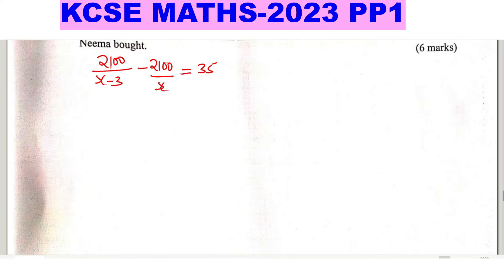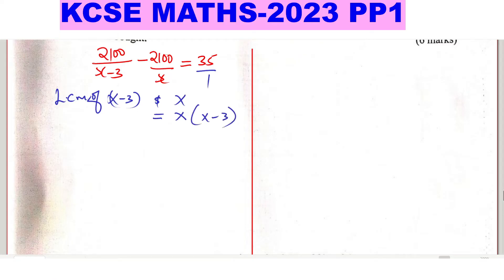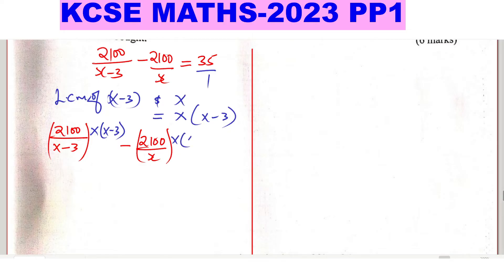To solve this equation, find the LCM of the denominators (X minus 3) and X, which gives X(X minus 3). Multiply each term by this LCM. So: 2100/(X minus 3) times X(X minus 3), minus 2100/X times X(X minus 3), equals 35 times X(X minus 3).